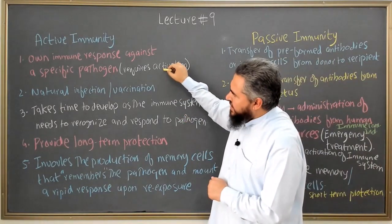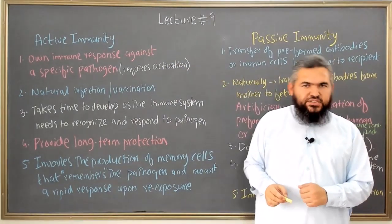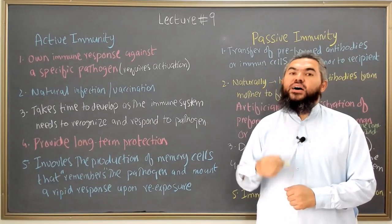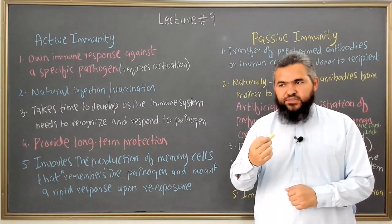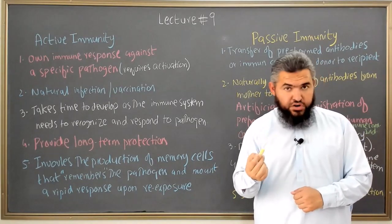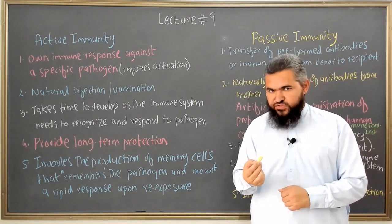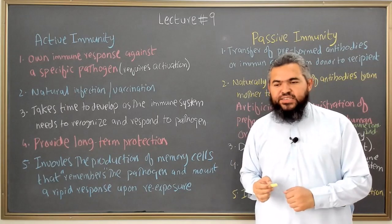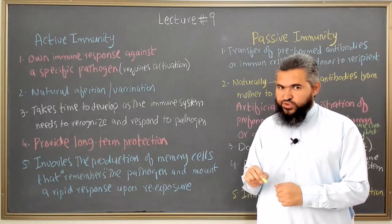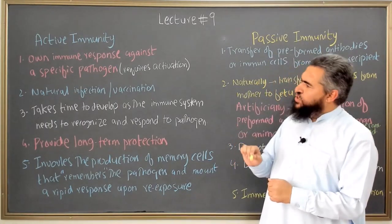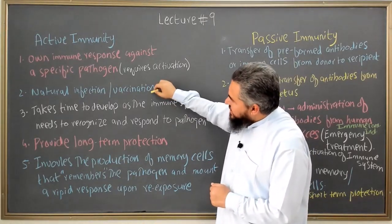Secondly, you can also activate active immunity by the process of vaccination. In vaccination, we give a vaccine to a particular individual — whether that is in killed form, attenuated form, or recombinant form. Different kinds of vaccines are available in the market. I have a detailed video on vaccines and will share the link in the description. Just keep in mind that vaccination is one of the ways to activate active immunity.